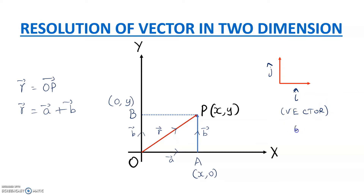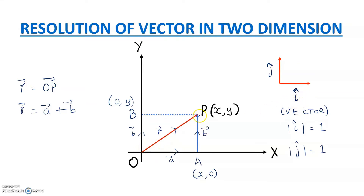The magnitude of i-cap is 1, and similarly the magnitude of j-cap is also 1. So if you multiply i-cap with any value, it scales by that value because the unit is 1. This point here is (x, y), so let's introduce i-cap onto the x-axis as our unit vector on the x-axis.